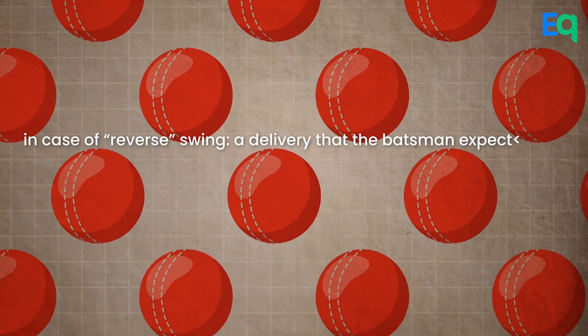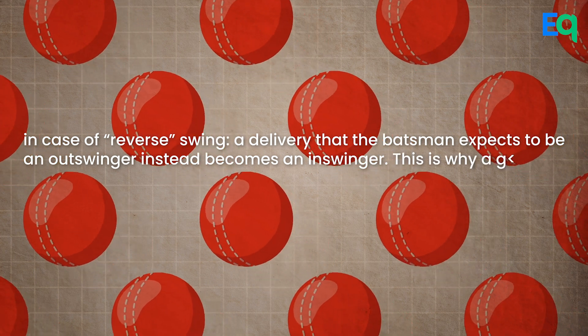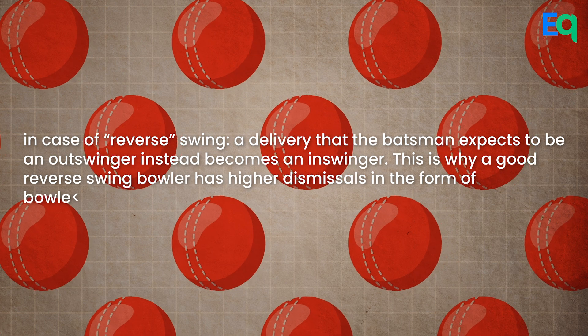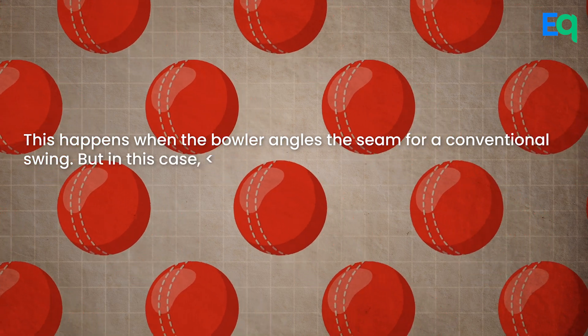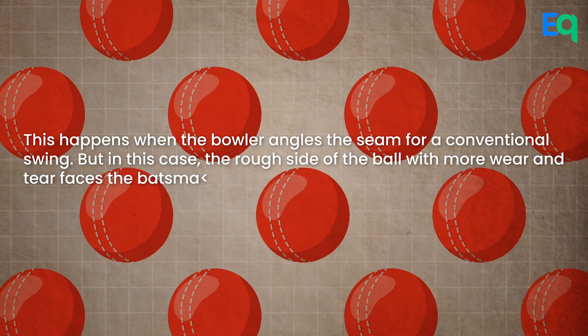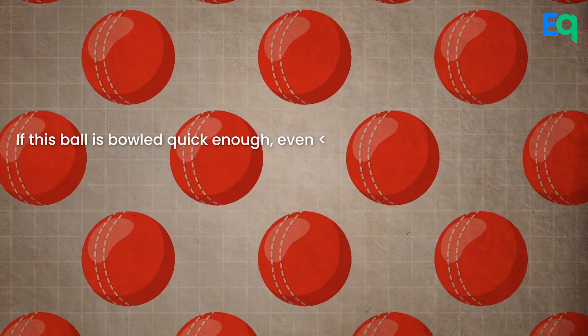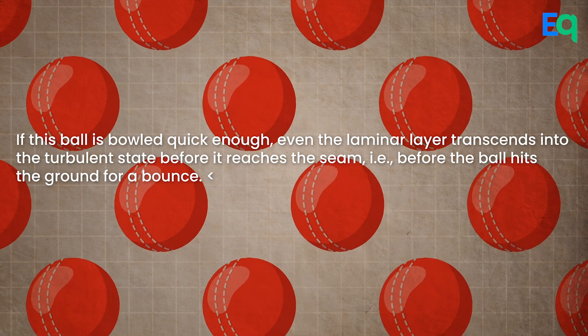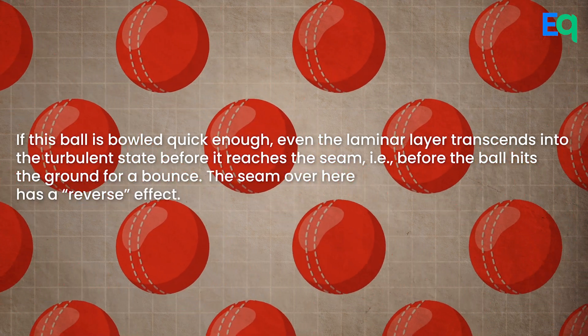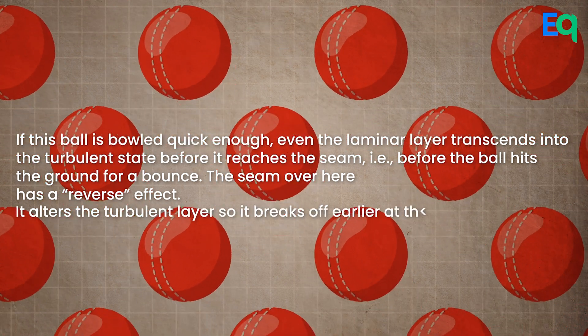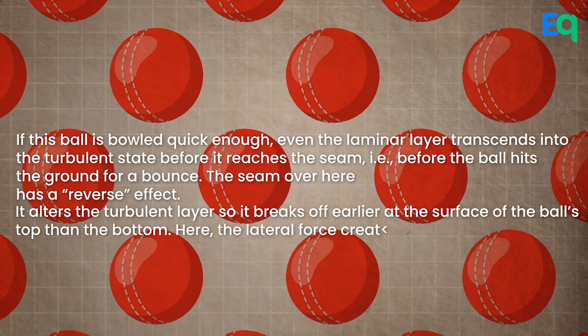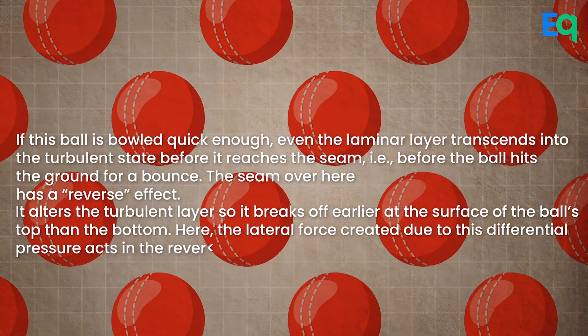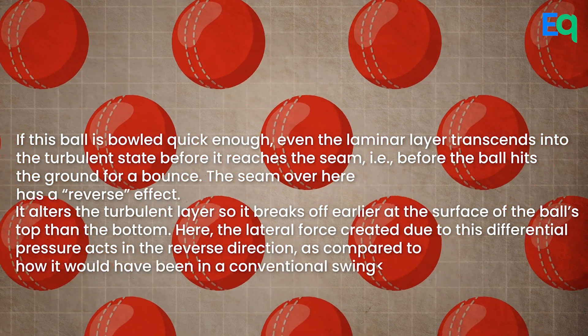Simply put, in case of reverse swing, a delivery that the batsman expects to be an outswinger becomes an inswinger. This is why a good reverse swing bowler has higher dismissals in the form of bolds and LBWs. This happens when the bowler angles the seam for a conventional swing, but in this case the rough side of the ball with more wear and tear faces the batsman. If this ball is bowled quick enough, even the laminar layer transcends into the turbulent state before it reaches the seam — that is, before the ball hits the ground for a bounce. The seam here has a reverse effect: it alters the turbulent layer so it breaks off earlier at the surface of the ball's top than the bottom. The lateral force created due to this differential pressure acts in the reverse direction, as compared to how it would have been in a conventional swing.